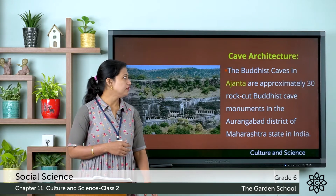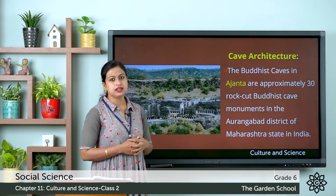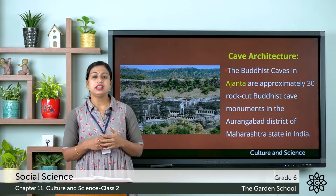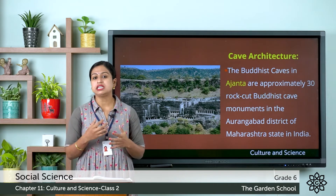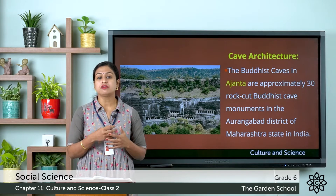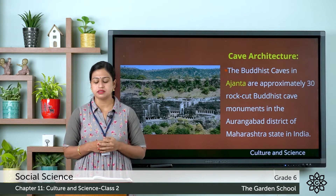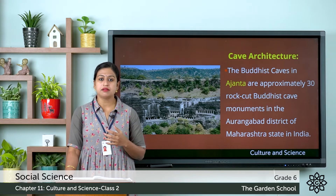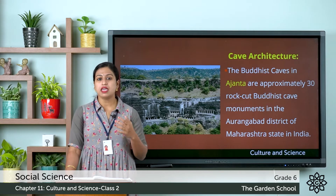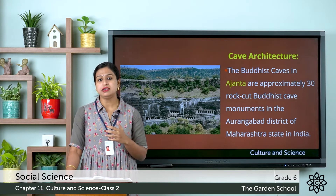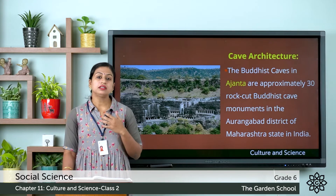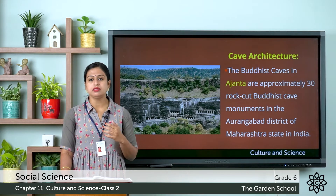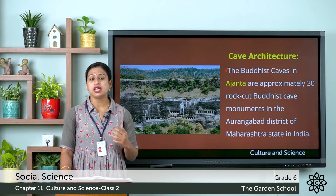Next, let us have a look at cave architecture. Cave architecture refers to artificial caves that were carved out of hills for religious purposes. Many of them are rock-cut caves, meaning the caves were made by chiseling the rocks. These rock-cut caves are mostly Buddhist in origin, although some are Hindu and Jaina as well.